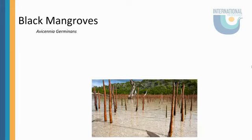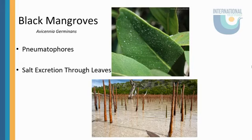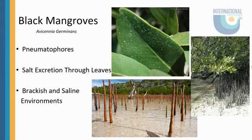Our next mangrove is the black mangrove. Black mangroves are best known for pneumatophores, also known as snorkel roots. Black mangroves have solved the problem of growing in anoxic, or non-oxygenated, sediments with these snorkel roots. These rootlets grow off the root and take in oxygen from the air, which is actually pretty cool. They also have salt excretion through the leaves — the salt pores are on the back of the leaves and leave little salt crystals. These plants can live in either brackish or saline environments. Black mangroves can also produce a mangrove honey, which can be eaten, which is a pretty cool little trait about them.